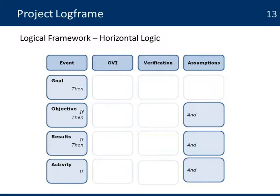That element is known as the horizontal logic. What it says is that once you have an activity and the assumptions linked to that activity are still valid, then you are going to be able to obtain the results. Let's look at how that works in the whole matrix.